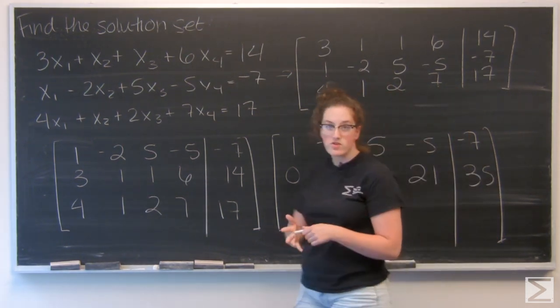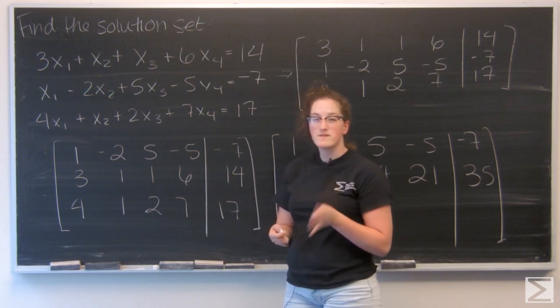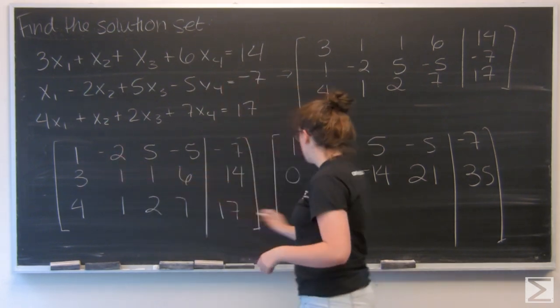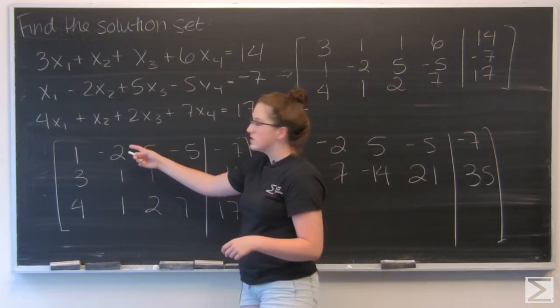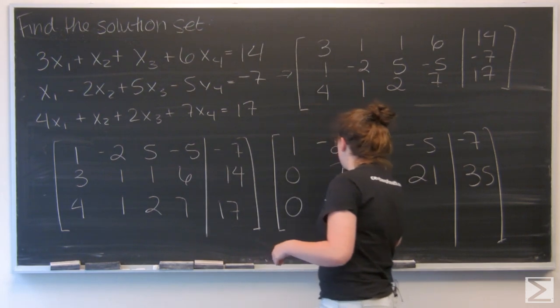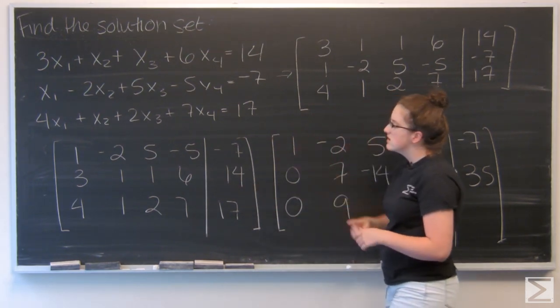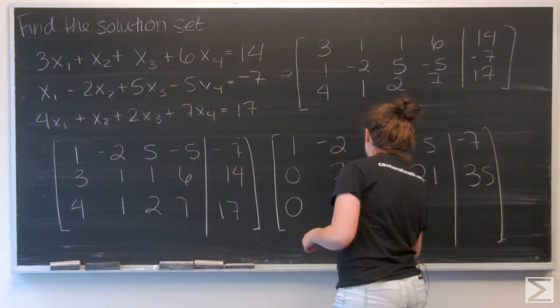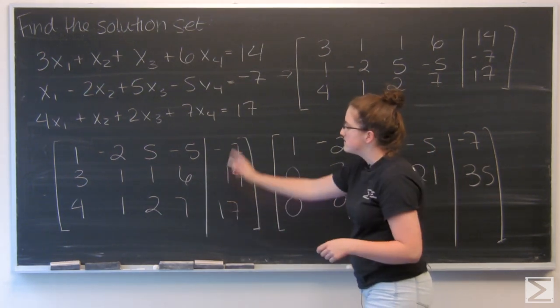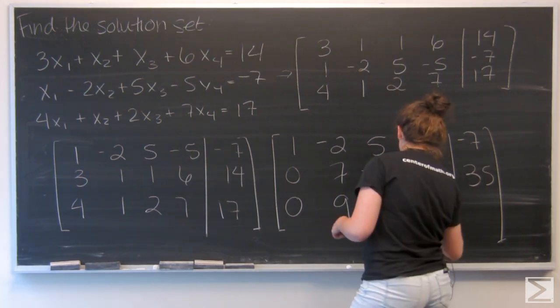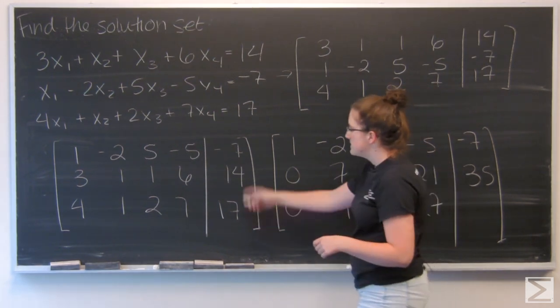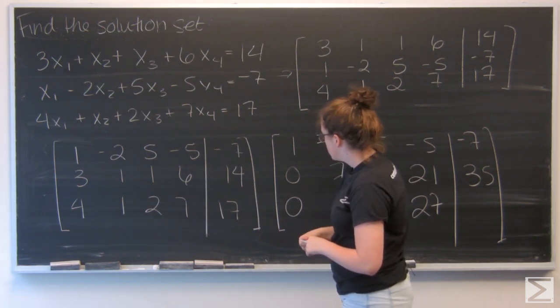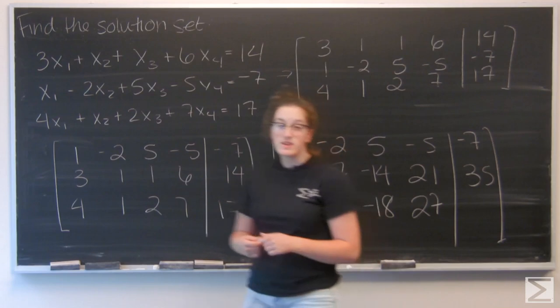And I want to do the same thing for the third row, so this time I'm going to subtract four times the first row. So I have four minus four gives me zero, one plus eight is going to be nine, two minus twenty gives me negative eighteen, and seven plus twenty gives me twenty-seven. And for the last element I have seventeen plus twenty-eight, which is going to give me forty-five.